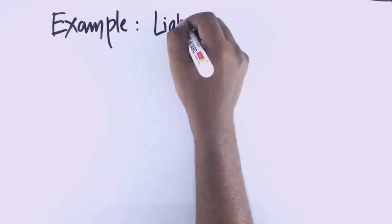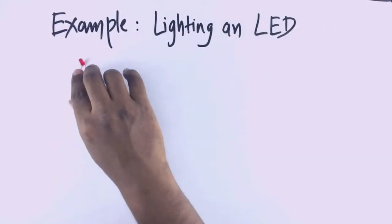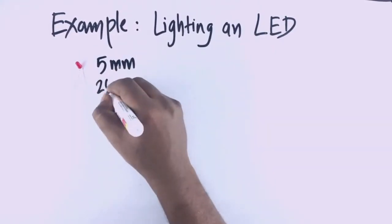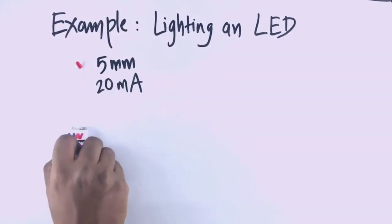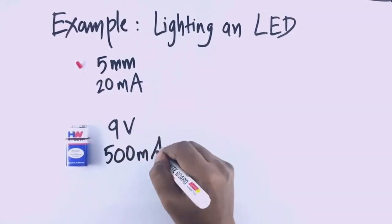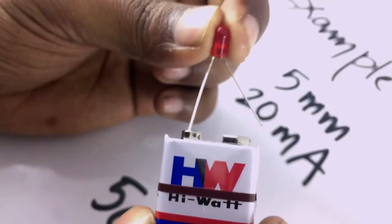Now where will limiting the current flow be useful? To understand this, we will look at this simple example: lighting an LED. We are using a 5mm LED which needs 20mA and a 9V battery which supplies about 500mA. So if I connect the LED directly, it will get damaged and will not work.